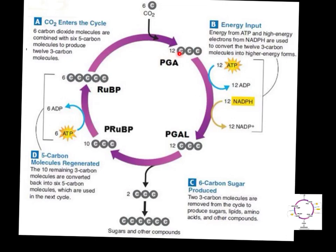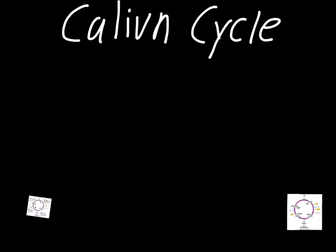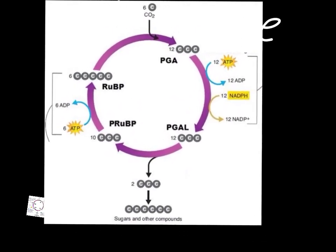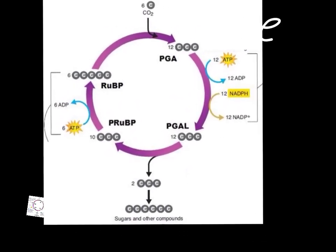Am I going to expect you to know that this is phosphoglycerate? No. What I'm expecting you to know is just the abbreviation. So instead of calling this a six five-carbon molecule, which gets very confusing, we'll just call it RUBP. That'll make this process a little bit easier. So we're going to get rid of the textbook version and focus more on the one that I adapted a little bit.